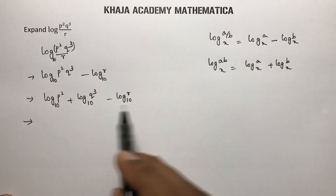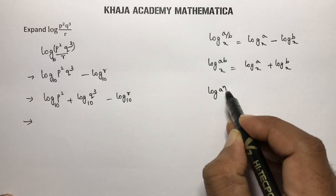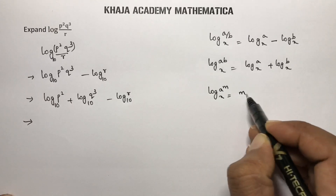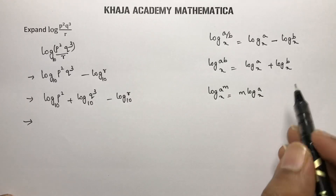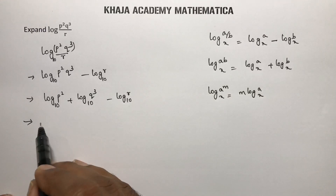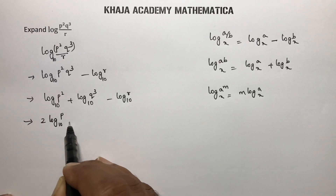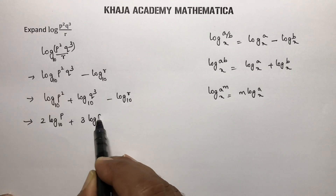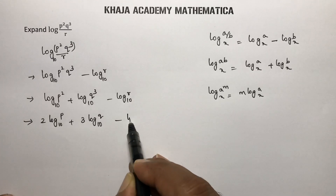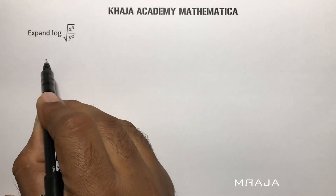Now apply the logarithm of a product to log p² q³, then apply the power rule: log(a^m) to the base x equals m·log a to the base x. The powers are 2 and 3, so we get 2·log p to the base 10 plus 3·log q to the base 10 minus log r to the base 10.